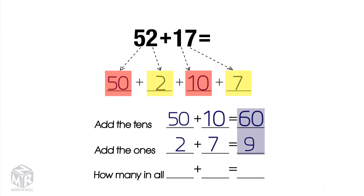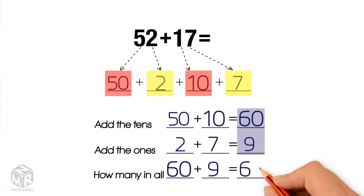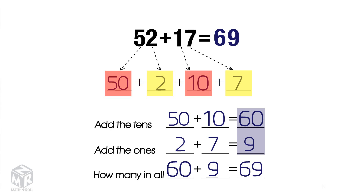Finally, we add them together: 60 plus 9 equals 69. So 52 plus 17 equals 69.